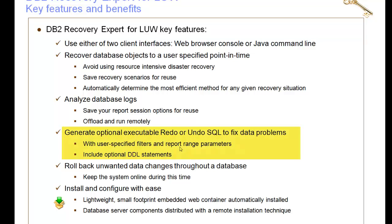One of the really cool features of Recovery Expert is its ability to undo a transaction. You can target single transactions or DML statements, use log analysis to find them, and then fix the data. If you ran a batch job with the wrong parameter and affected a million rows, you can undo that effect. Not only can you undo, but you can also redo — generating a script that replays what was done before, perhaps in another database. Either undo or redo transaction SQL.